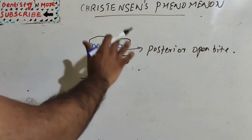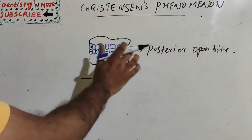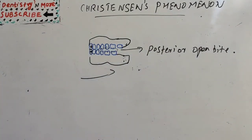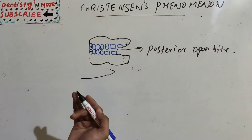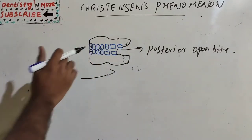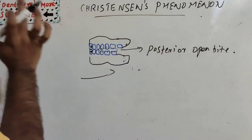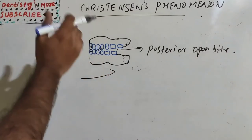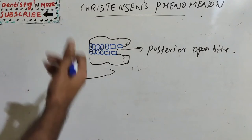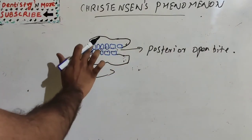We need to apply compensatory curves in the teeth arrangement to solve this problem of posterior open bite. In the case of a denture, we need simultaneous anterior and posterior contacts when the mandible is protruded — when the patient brings the lower denture against the maxillary central incisors or front teeth.